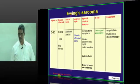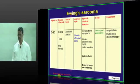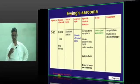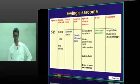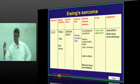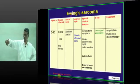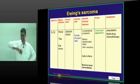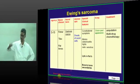The difference is: Ewing sarcoma occurring in the long bones will produce onion peel appearance. The same Ewing sarcoma in flat bones like calcaneum, scapula, etc., will produce lytic areas. In long bones — onion peel; in flat bones — lytic.